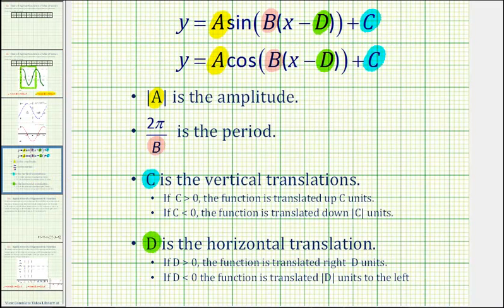So for a quick review, for both the sine and cosine function, the absolute value of a is equal to the amplitude. Two pi divided by b is equal to the period of the function. The value of c affects the vertical translation, or shift up or down. And the value of d affects the horizontal shift, or phase shift, which is a shift left or right.